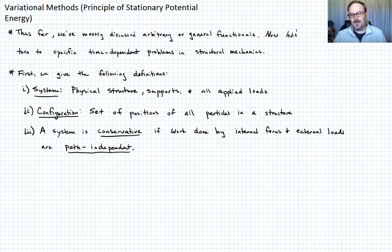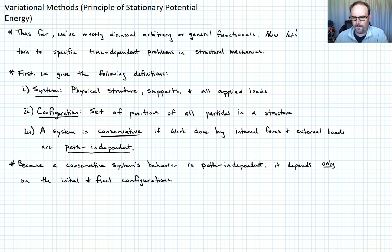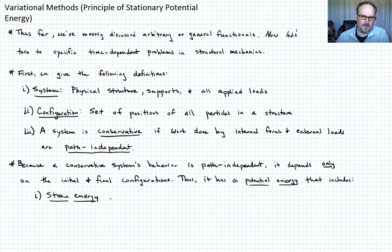So because a conservative system's behavior is path-independent, then it depends only on the initial and final configurations. And because of this, it has a potential energy that includes the following. Primarily, we focus on two features of the potential energy. One is the strain energy, and that's going to be the strain energy of elastic distortion.